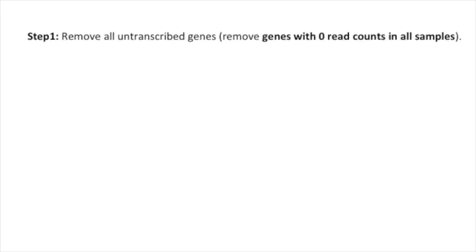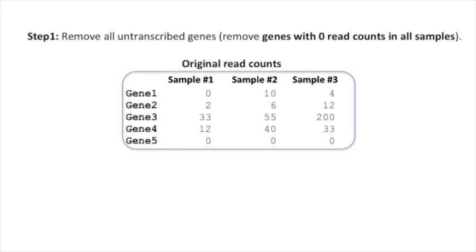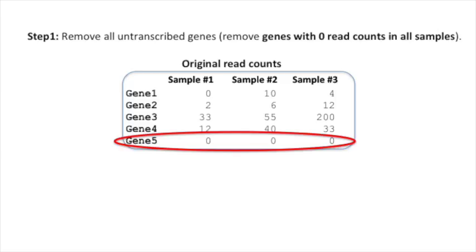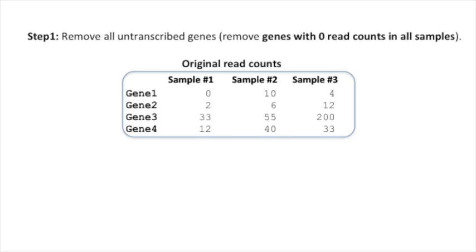Step 1: Remove all untranscribed genes — that is to say, remove all genes with zero read counts in all samples. Here's an example: we've got three samples and five genes. The last gene, gene 5, has zero read counts in all three samples, and so we will remove gene 5 from our list of genes.